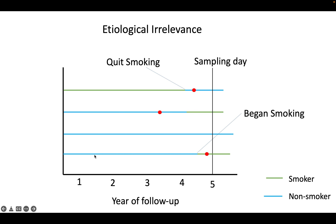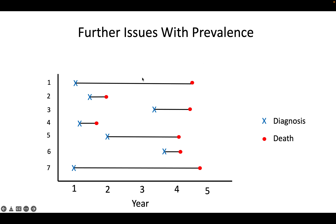Another problem: someone logged a lot of time as a non-smoker and only a very small amount of time as a smoker, yet they got the disease — so the study counts them as a smoker with the disease. But there's no way that brief smoking caused their lung cancer; it probably came from occupational exposure or just bad luck. That's what I mean by prevalence making it hard to ensure that someone's current exposure status is representative of why they have the disease.